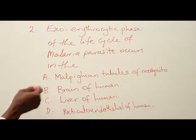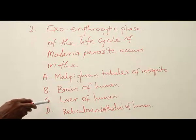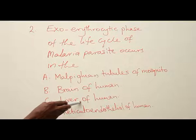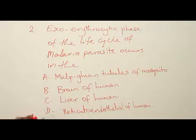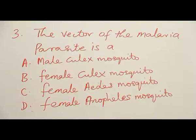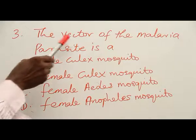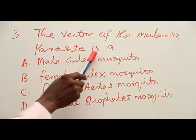The parasite goes into the mosquito's salivary gland to develop before coming out again. The exo-erythrocytic stage of development is mainly in the liver of the human. So the answer to example two is C — liver of human.